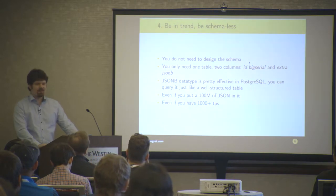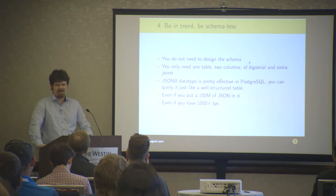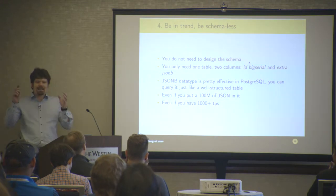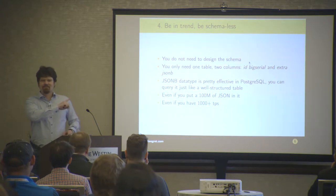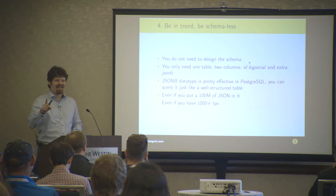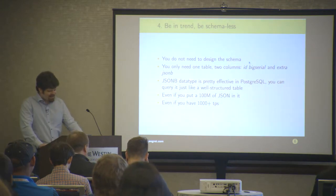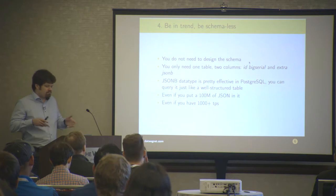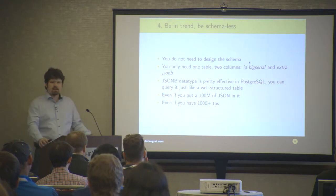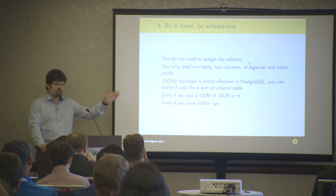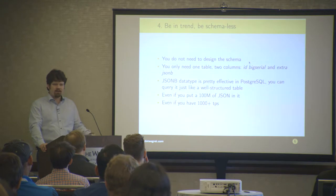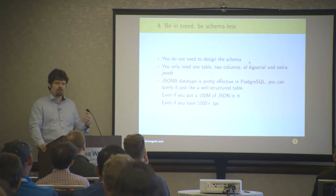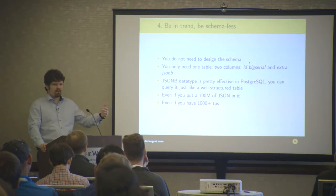Be in trend. Be schemaless. Because this boring schema from back in the 70s is an annoying thing. You just don't need to design a schema. You only need one table. JSONB data type is pretty effective in Postgres, so you can search this quasi-table just like a normal table. You can put 100 max in the JSON type, put thousands of parallel TPS, and that's it. That's working. JSON is very effective. That we call a very universal approach — for each and every application, you can basically have the same schema.